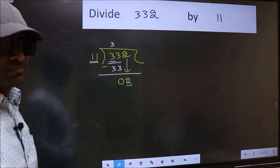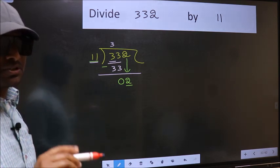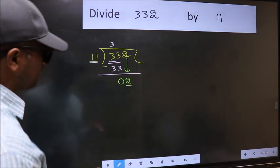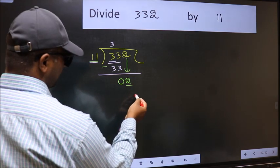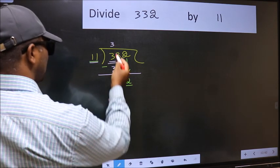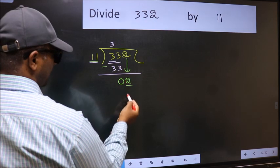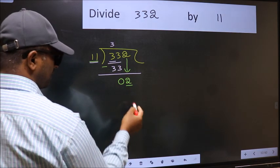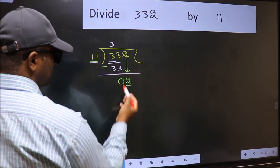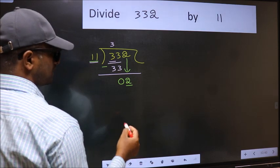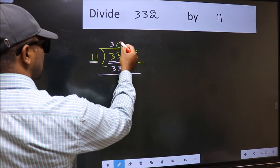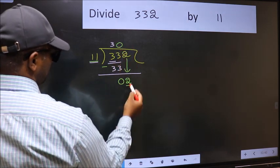Instead, what you should think of doing is, which number should we take here. If I take 1, we will get 11. But 11 is larger than 2. So what we should do is, we should take 0. So 11 into 0, 0.